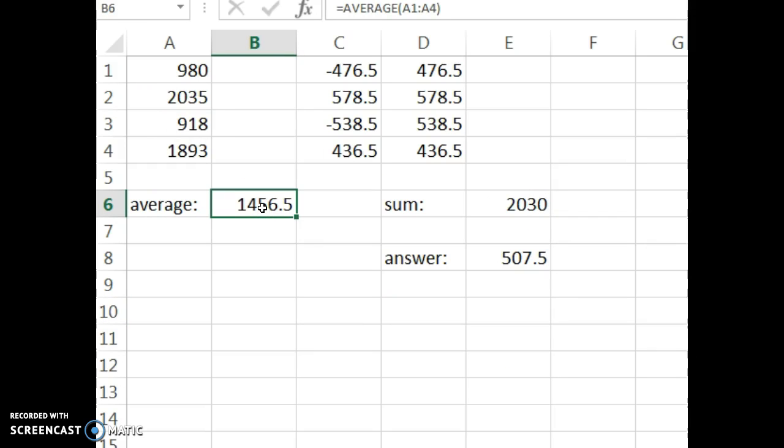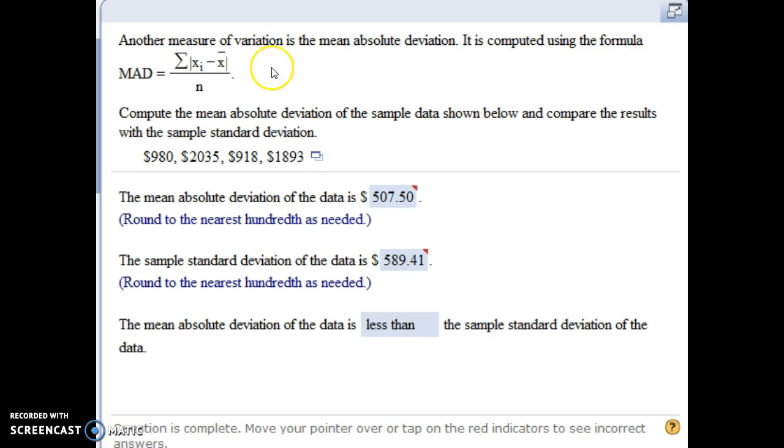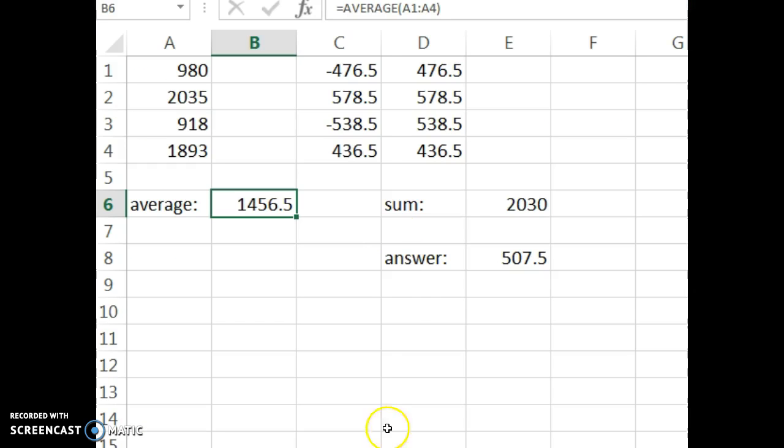First thing I do is find the average because we need the average. The X with the bar over it is a symbol for the average, and we're going to take each number and subtract the average. So here that's what I did. I took each individual number and subtracted 1456.5, the average.